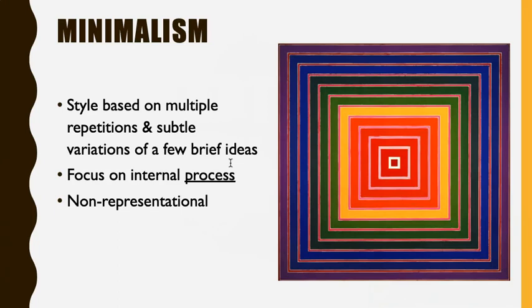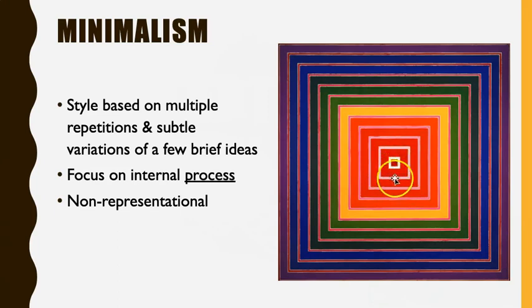Much of this music, and also this style of painting, is considered to be non-representational, meaning it's not actually depicting any particular object or person or thing or place. This is a painting by the minimalist painter Frank Stella. It's non-representational — not a picture of a horse or a person or a landscape, simply abstract squares. We can think of the square as our main melody. It's simple and minimal, but he's just repeated that square over and over, each time slightly bigger and filled with a slightly different color.